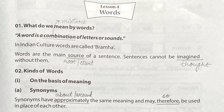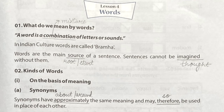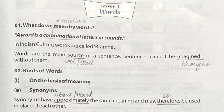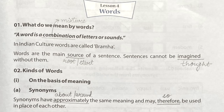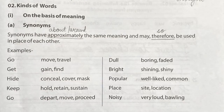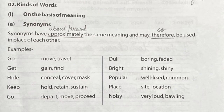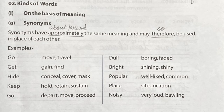Next, we are going to discuss kinds of words. There are many kinds of words based on meanings — like synonyms and antonyms. Synonyms are words that have the same or approximately the same meaning. Antonyms are words that have the opposite meaning. Today we are going to discuss only synonyms.